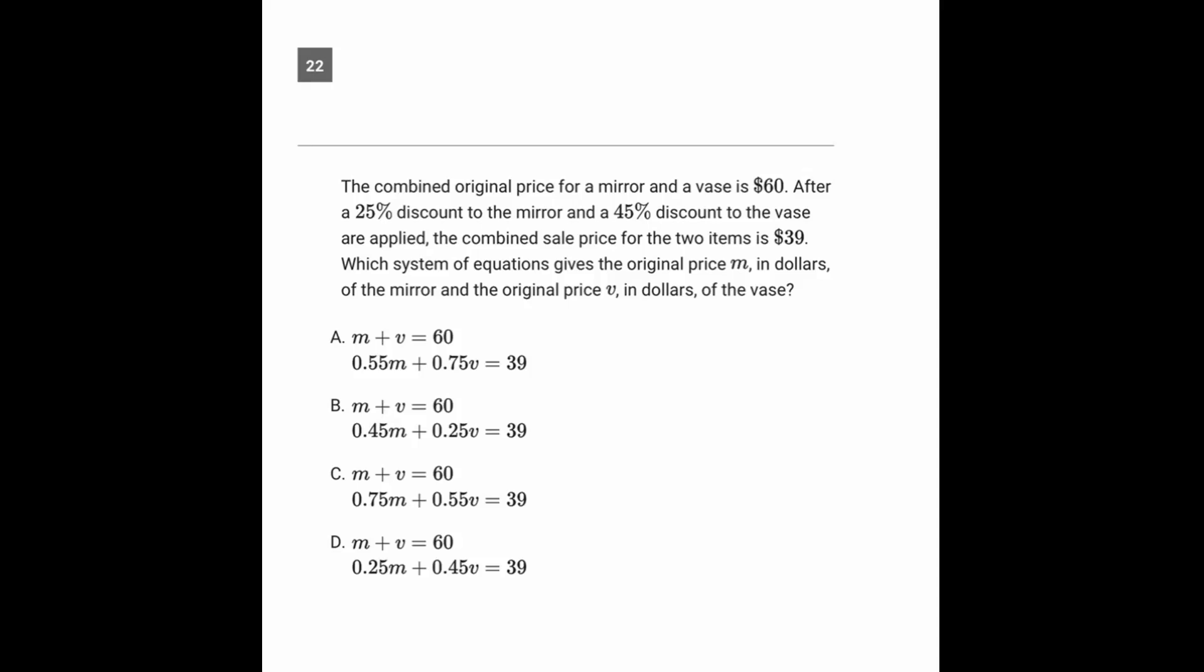Now going over to question 22. Here we're being told that M is the original price of a mirror, and we're being told that V is the original price of a vase.